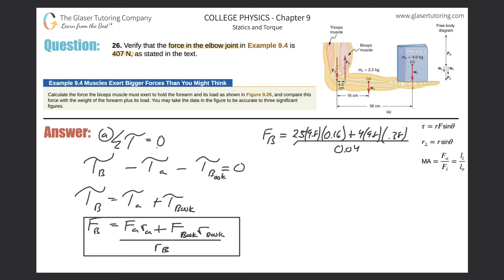So now the force that the biceps are exhibiting will be, let's calculate. So 2.5 times 9.8 times 0.16, plus 4 times 9.8 times 0.38, all divided by 0.04. So this would be 470, 470 newtons. So that is the force that the bicep is exhibiting.